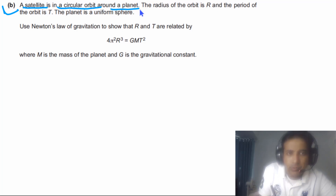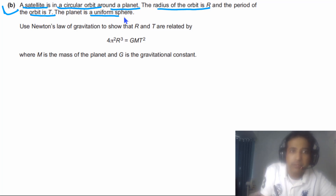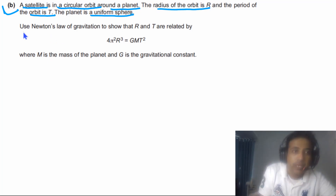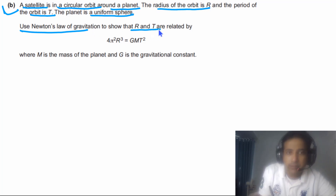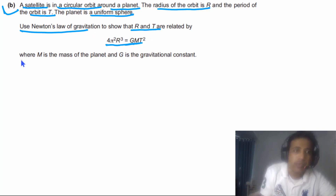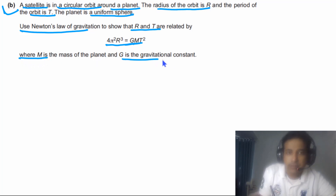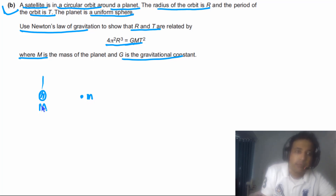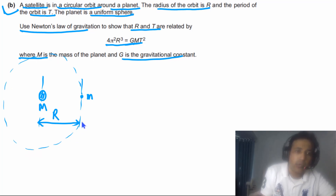Part (b): a satellite is in a circular orbit around a planet. The radius of the orbit is capital R and the period is capital T. The planet is a uniform sphere, so we can treat it as a point mass. Use Newton's law of gravitation to show that R and T are related by 4π²R³ = GMT². We sketch: planet of mass M at centre, satellite of mass m orbiting at radius R.